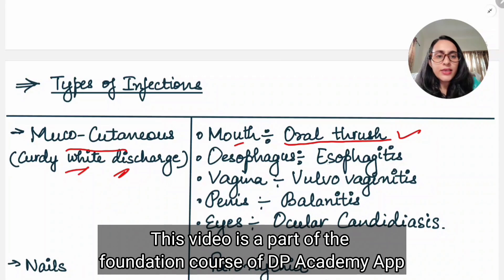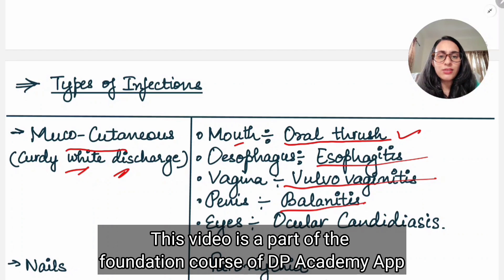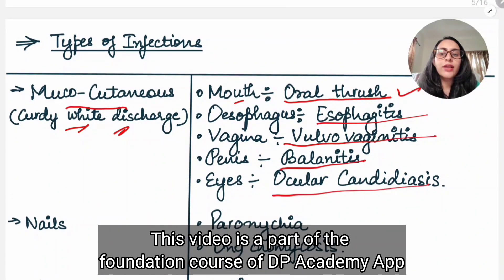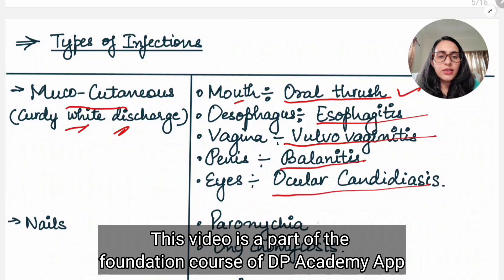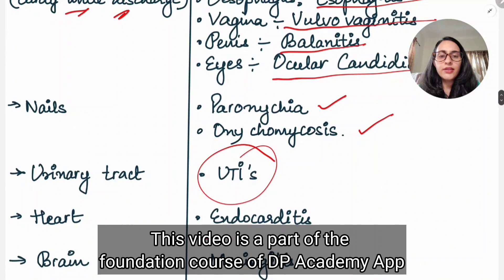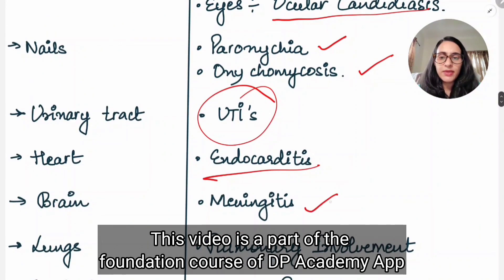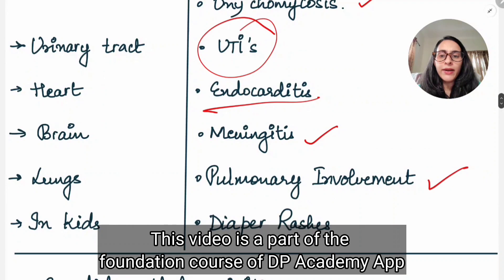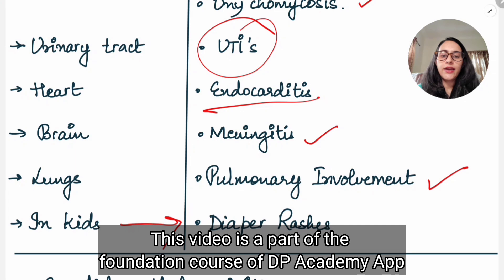In the esophagus, Candida causes esophagitis. In the vagina, it causes vulvovaginitis. In the penis in males, it causes balanitis. In the eye, it causes ocular candidiasis. In the nails, it is known as paronychia and can also cause onychomycosis. In the urinary tract, it causes UTI. In the heart, it can cause endocarditis. In the brain, it can cause meningitis. In the lungs there is pulmonary involvement. And in kids, it causes diaper rash.